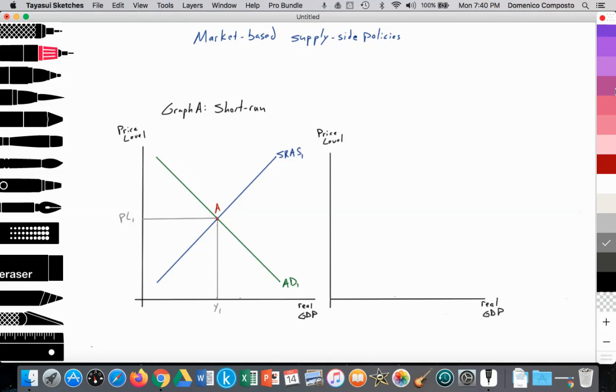And in the next graph, let's label this graph B. This is looking at the long run. What's the long run impact of these policies? We'll have our LRAS curve right here, illustrating full employment of our resources. And that provides us with a finite amount of output or potential GDP at YP1.